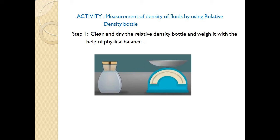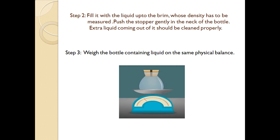Step one: clean and dry the relative density bottle and weigh it with the help of a physical balance, and mark it as m1. So mass of empty bottle equals m1. Step two: fill it with the liquid up to the brim whose density has to be measured. Use the stopper gently in the neck of the bottle. Extra liquid coming out should be cleaned properly, because if not cleaned, the measurement of mass will be incorrect as it would include the mass of liquid on the outside wall of the bottle.